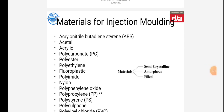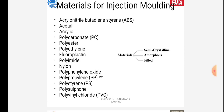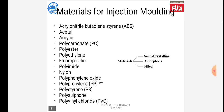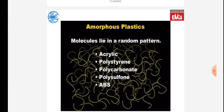Welcome back. We will now see the topic of manufacturing process. The subject is materials for injection molding: acrylonitrile butadiene styrene, acetal, acrylic, polycarbonate, polyesters, polyethylene, fluoroplastic, polyamide, nylon, polyvinyl oxide, polypropylene, polystyrene, polysulfone, and polyvinyl chloride. These are the materials used for injection molding.